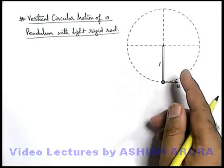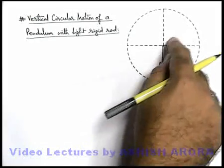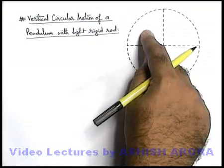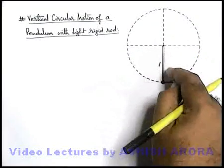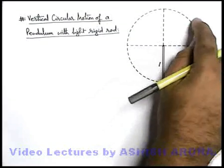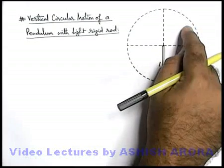Where it may be possible, depending on the initial speed, that at some point the tension in the string becomes zero and the bob will start following a projectile motion. Unlike that case, in case of a vertical rigid rod, if we throw it at a particular angle theta, the tension in the rod can never be equal to zero.